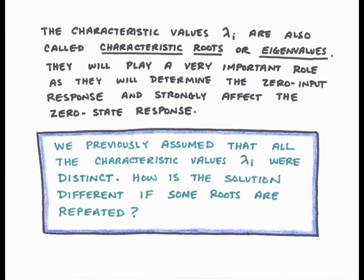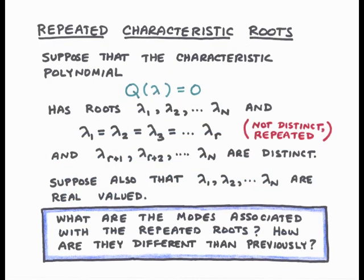So far throughout this discussion we have assumed that all characteristic values are distinct. Now we turn to the case where some of the characteristic values are not distinct. How will this affect the solution that we find? So now let's look at the case of repeated characteristic roots.